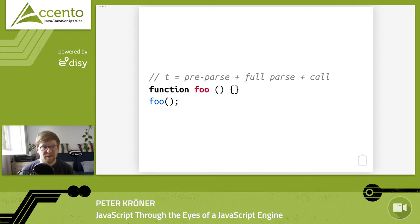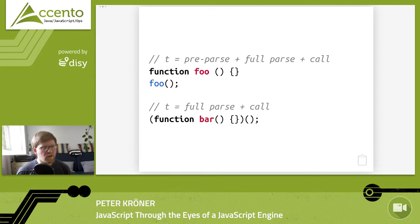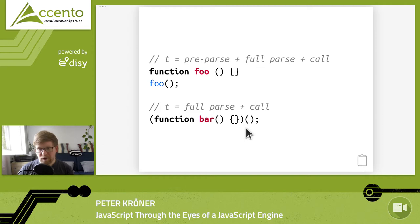So how does the JavaScript engine figure out that a function will never get called? If we have a function definition followed by a function call, the engine does a prepass first, then a full parse when the function is actually called. This means function foo is processed twice — prepass first, then full parse before execution. For an immediately invoked function expression (IIFE), there's no prepass at all — the engine knows the function is going to be executed right away, so it skips the prepass and immediately does the full parse.